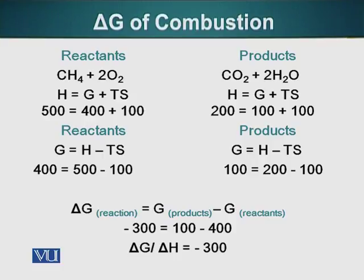Since temperature is constant, this amount of energy is released as we go from methane and oxygen to carbon dioxide and water. When we apply our equation, we see that usable energy of the reactants was 400 and the usable energy of the products is 100. So delta G equals the free energy of the products minus the free energy of the reactants, giving us delta G equals minus 300 — the amount of energy released from the system. This energy was part of the free energy portion of the total system energy.